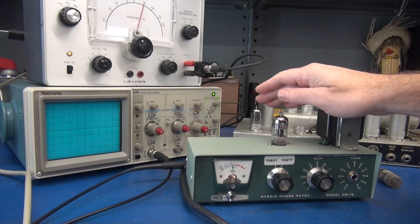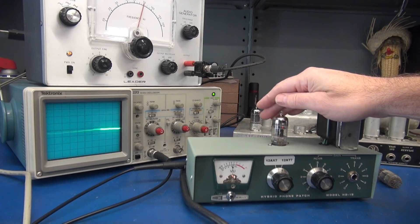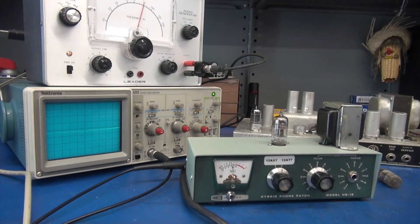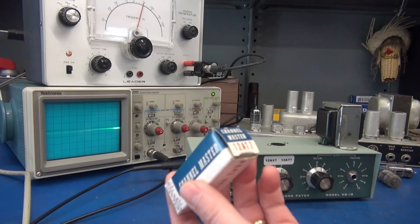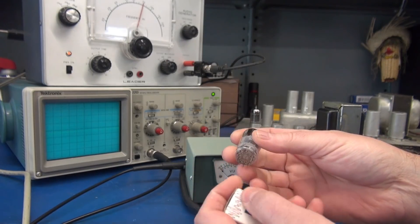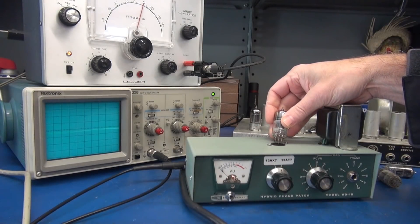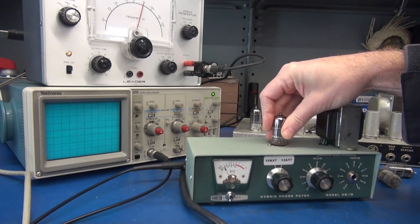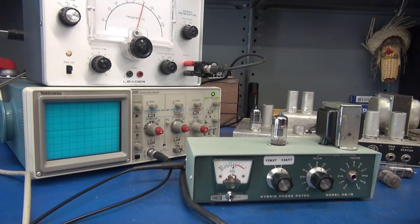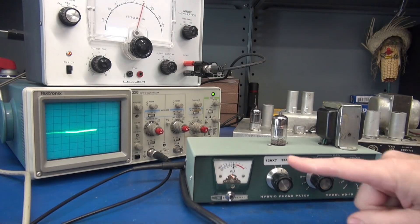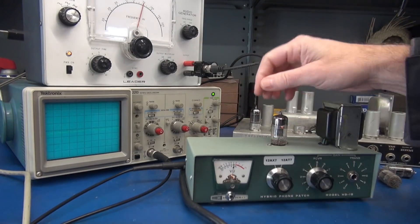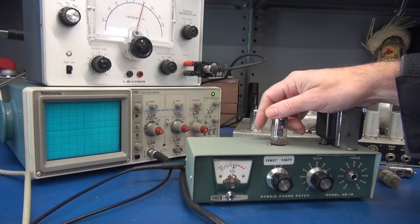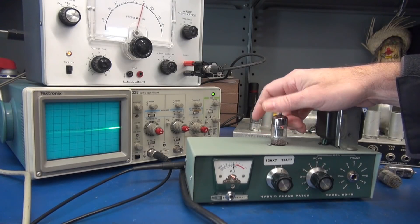So let's take a new 12AT7. I happen to have some Mullards. And let's re-perform this test. Alright, so I guess I should have looked before I told you guys I had a new Mullard. But I do have a new Channel Master 12AT7. We'll put that one in and see how it looks compared to the 12AT7 from the Super. You can see our idle current is a little bit higher. How about microphonics? Look at there. She's clean as a whistle.